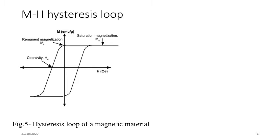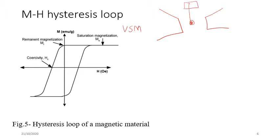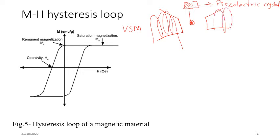To study the M-H or B-H hysteresis loop, a Vibrating Sample Magnetometer (VSM) is used. On the x-axis is the externally applied magnetic field intensity H, given in Oersteds or amperes per meter. Magnetization is on the y-axis, in amperes per meter or in emu/gram in practical use. In a VSM setup, there are electromagnets and a sample of non-magnetic material with a piezoelectric crystal attached at the top.